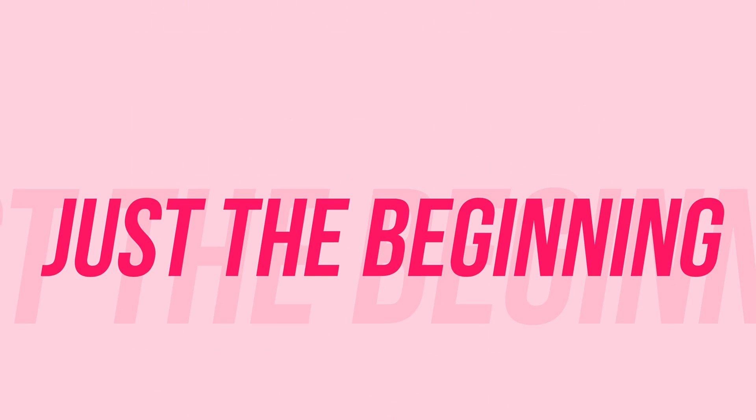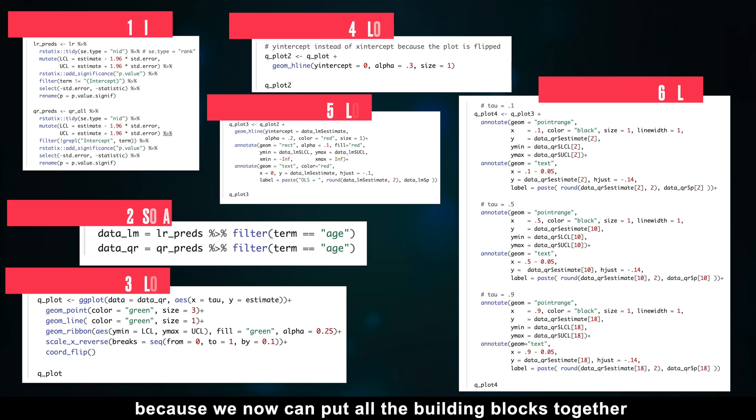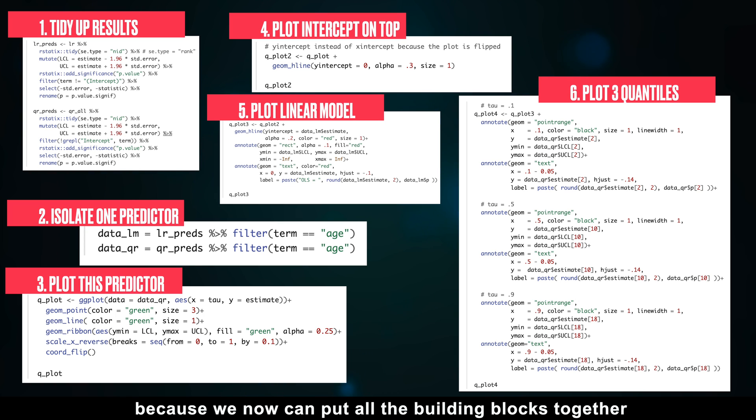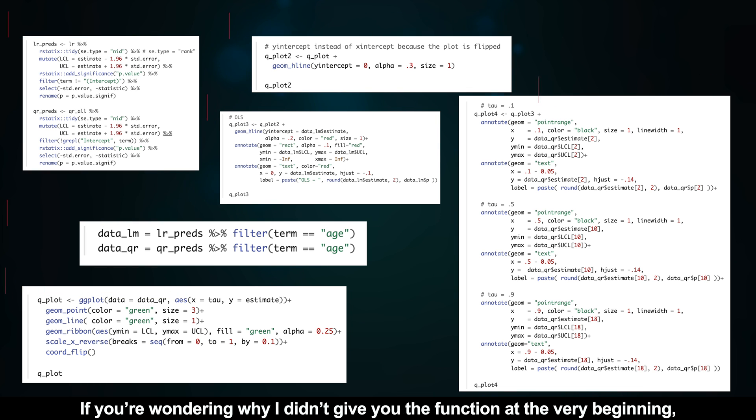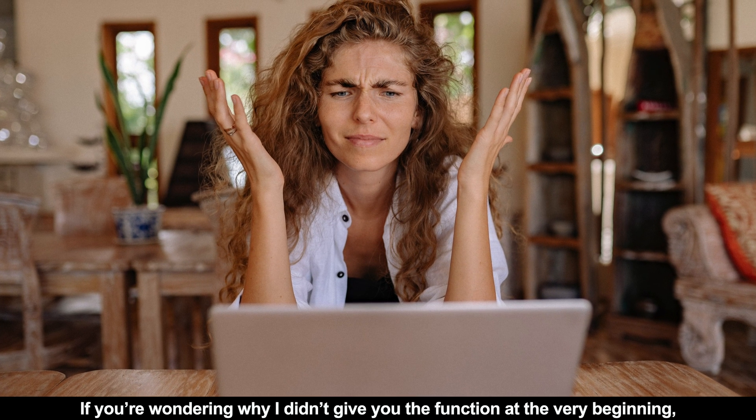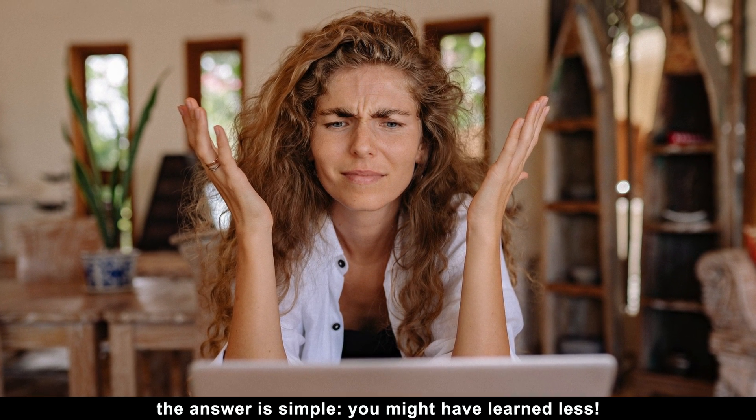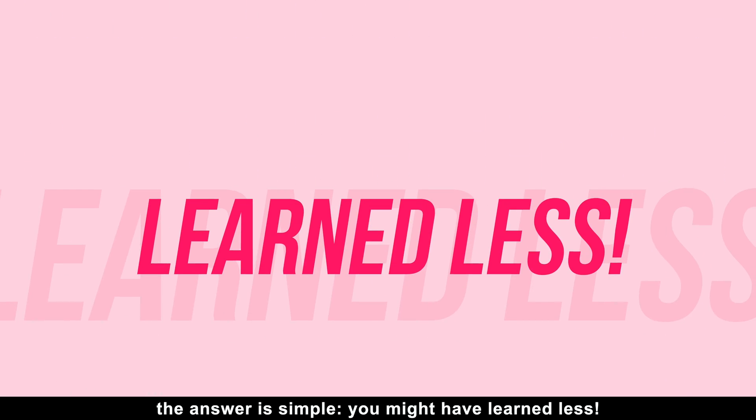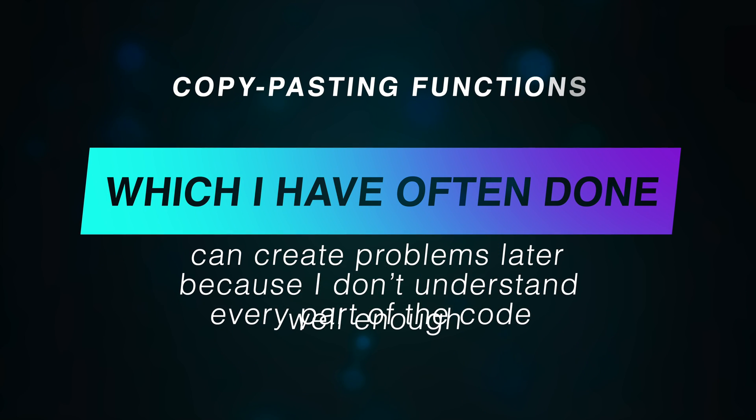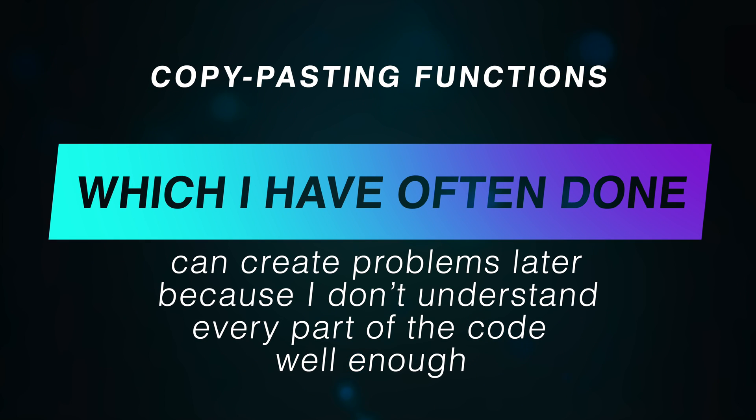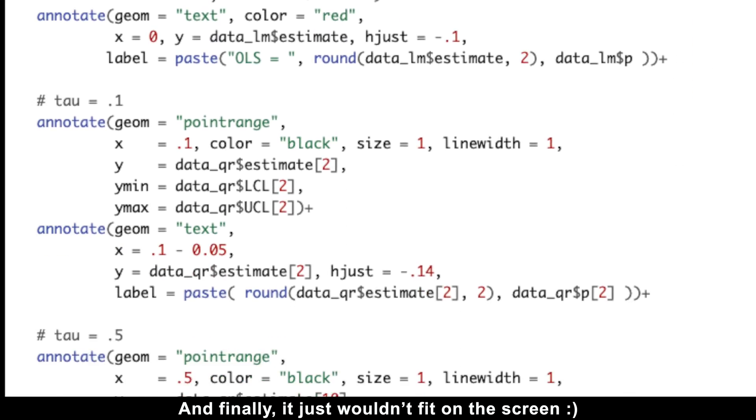So this picture combines the capabilities of sjplot and quantreg packages. But that is just the beginning, because we now can put all the building blocks together and create a function that automates this procedure for any predictor in a multi-variable model. If you're wondering why I didn't give you the function at the very beginning, the answer is simple. You might have learned less. Besides, copy-pasting functions which I have often done can create problems later, because I don't understand every part of the code well enough. And finally, it just wouldn't fit on the screen.